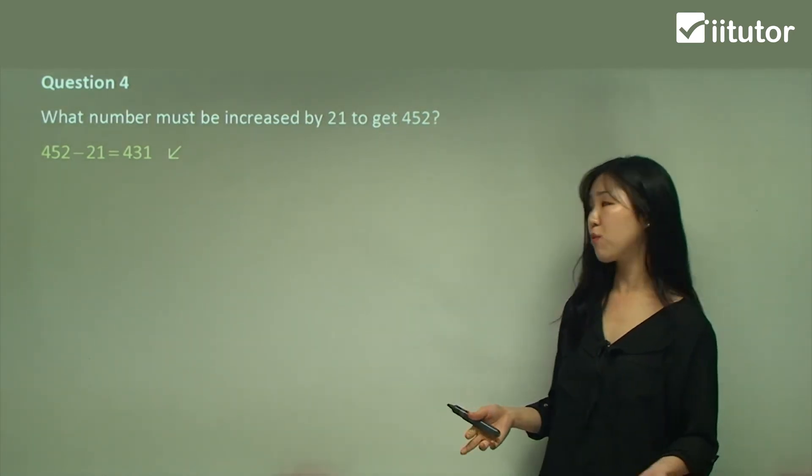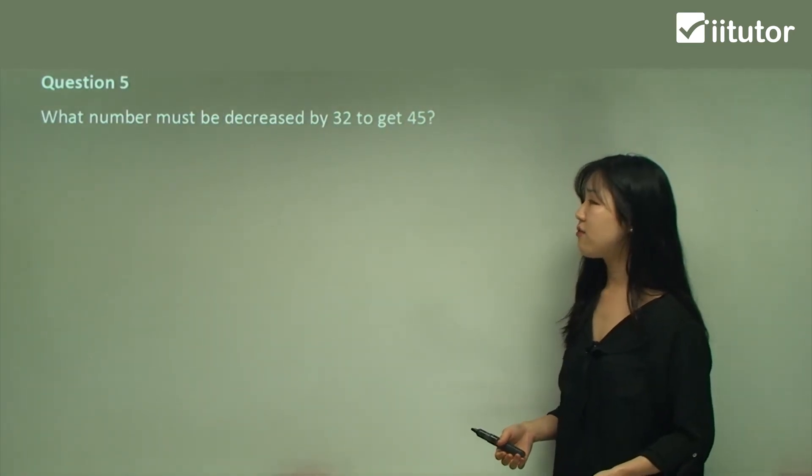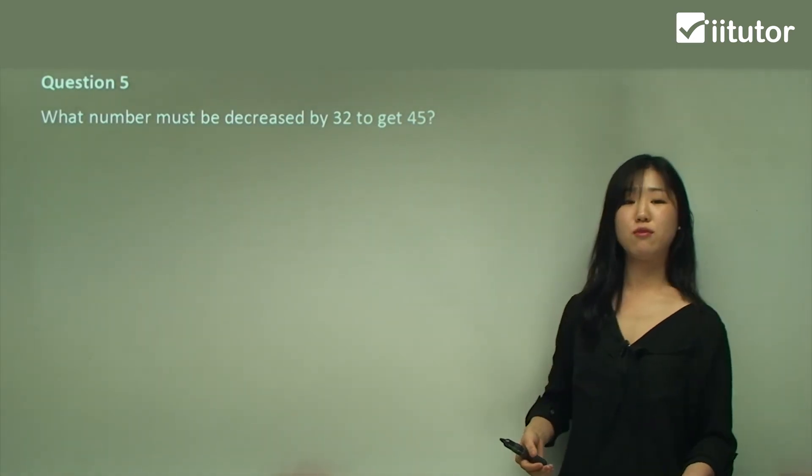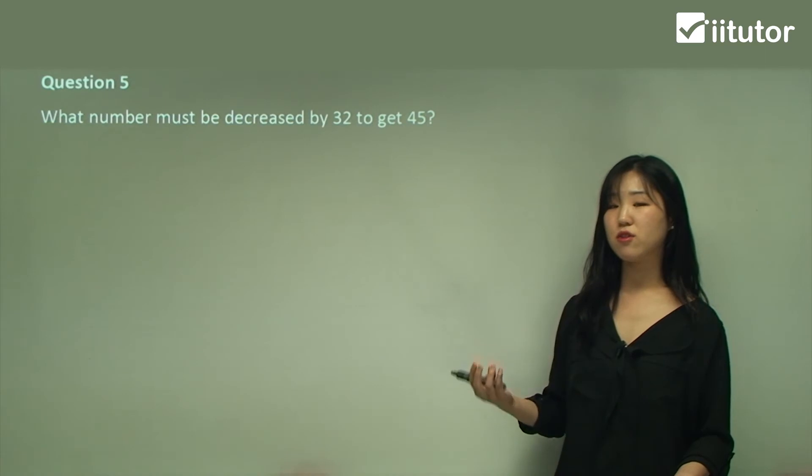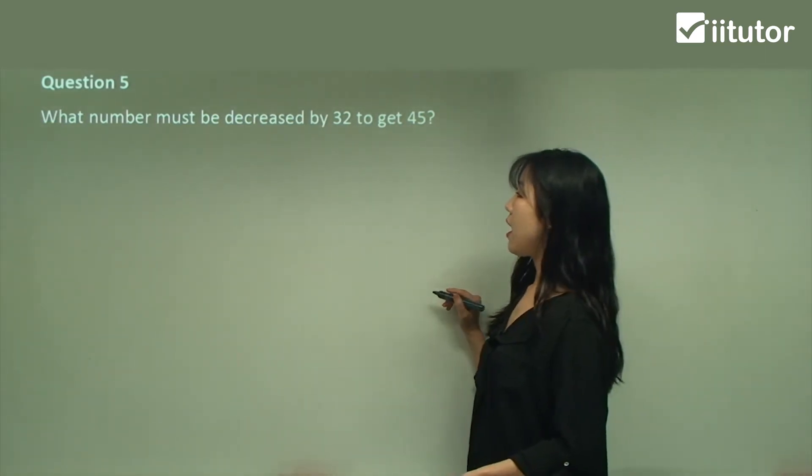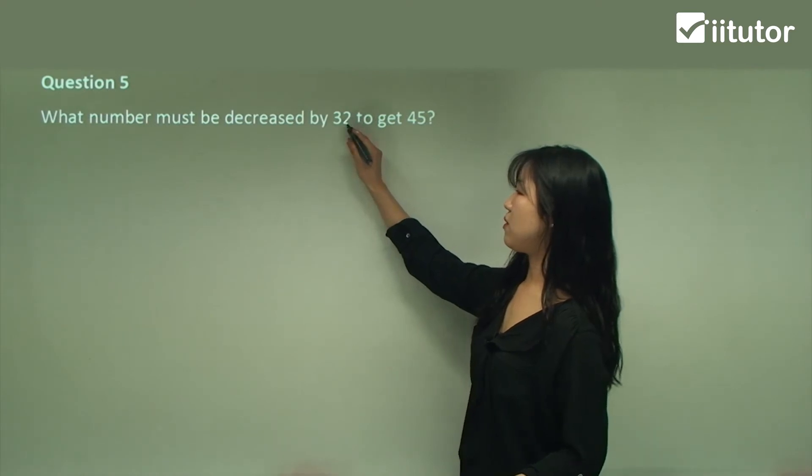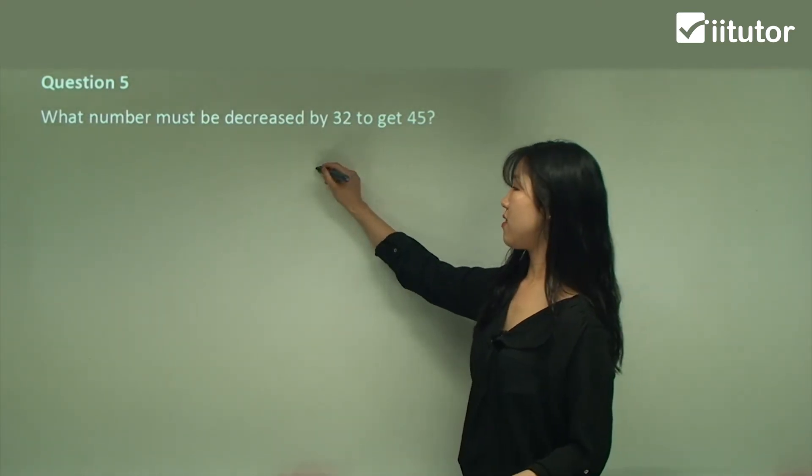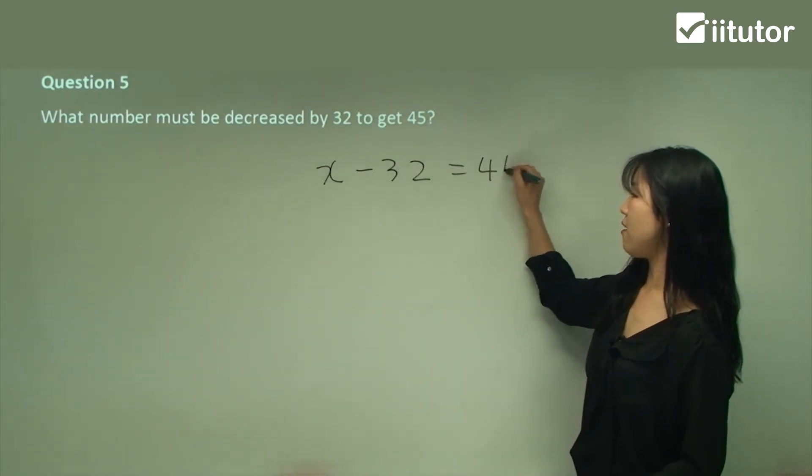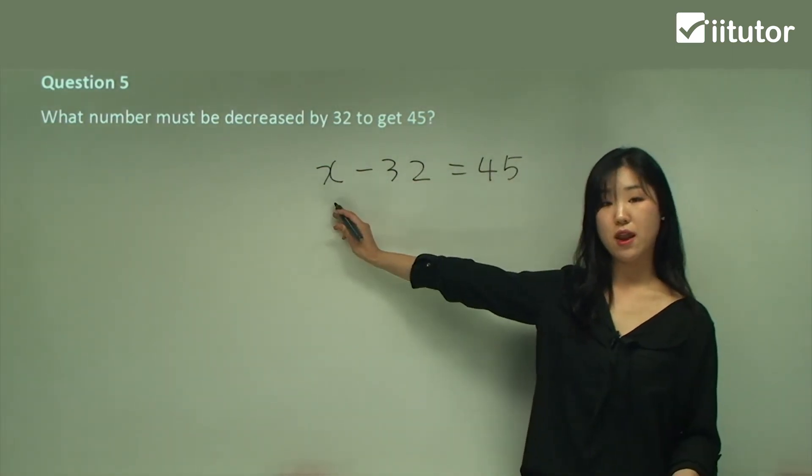Question five: what number must be decreased by 32 to get 45? So what number, if I subtract 32, will get 45? By 32, which means we're decreasing by 32. So let's say the number is x. If I'm decreasing by 32 to get 45, that's the number that I want.